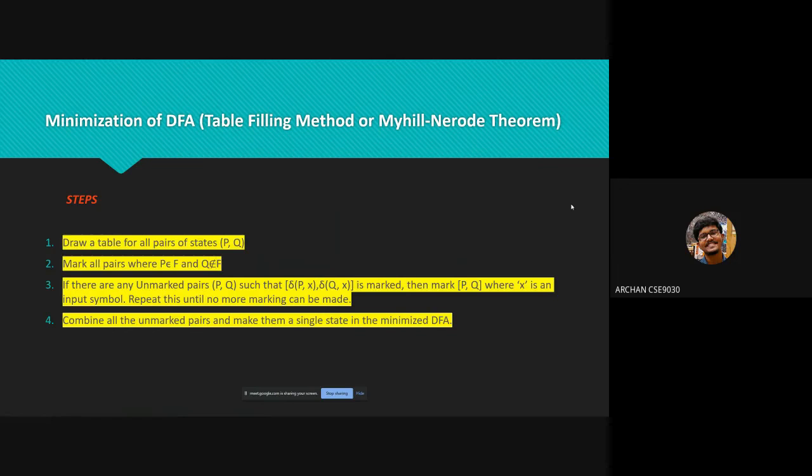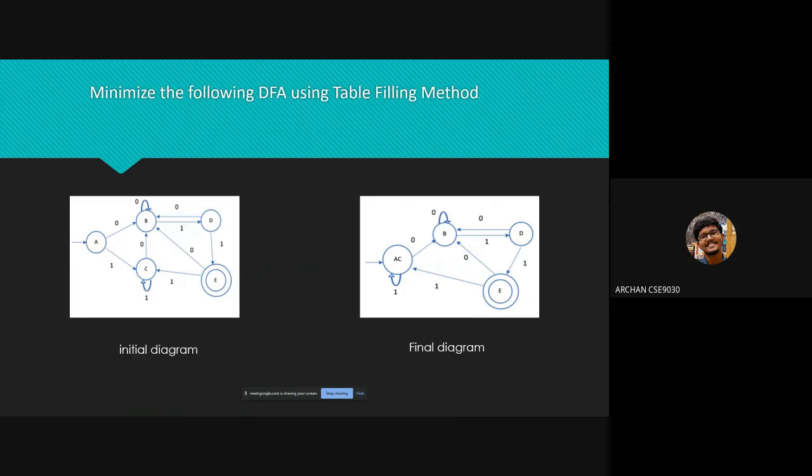Step three: repeat this step until we cannot mark any more states. If there is an unmarked pair Pi, Qi, mark it if the pair delta of P comma A comma delta of Q comma A is marked for some input alphabet. Step four: combine all the unmarked pairs P comma Q and make them a single state in the reduced DFA.